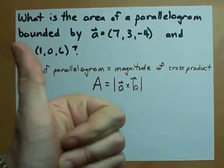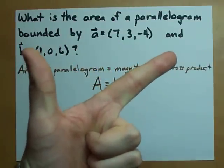So, all we gotta do: one, find the cross product. Two, find the magnitude. Done.